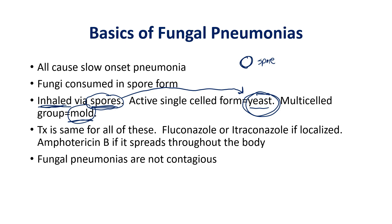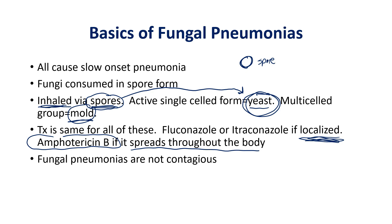Treatment is the same for all of these: give fluconazole or itraconazole if the infection is localized — which covers the majority of cases in non-immunocompromised patients. Give the big guns, amphotericin B, if it spreads throughout the body or is disseminated. Also important: fungal pneumonias are not contagious. The only way another person gets the same infection is if they were in the same spot and inhaled the same fungal spores.